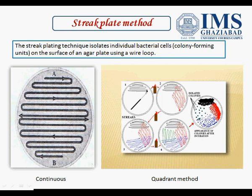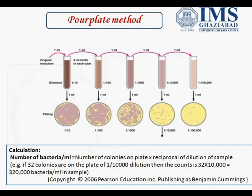In continuous streaking, we take the bacterial culture and start streaking from one end, continuously up to the end. In the quadrant method, we start streaking, stop at the end, heat the loop, start streaking again, then heat again and streak again. The purpose of this heating is to isolate the culture in pure form.